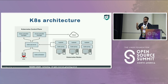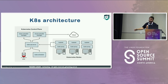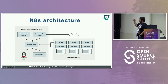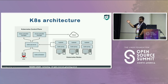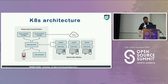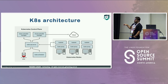Before I talk about anything security-related, we need to understand how Kubernetes works — the main components of a Kubernetes cluster. Looking at the left side, the control plane, which used to be called the master node, we have five main components. The one in the middle talking to all other components, including the worker nodes, is the Kube API server. It's basically a REST API which receives and sends all the calls from and to the Kubernetes cluster. It deals with authentication, authorization, and admission controlling.